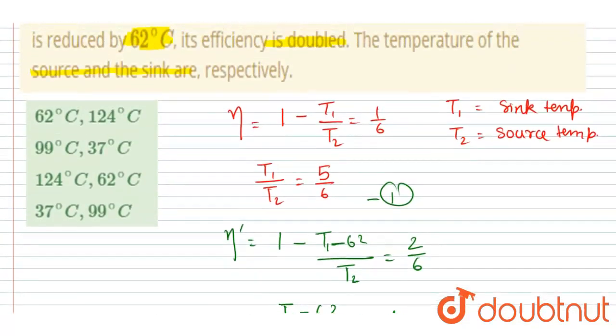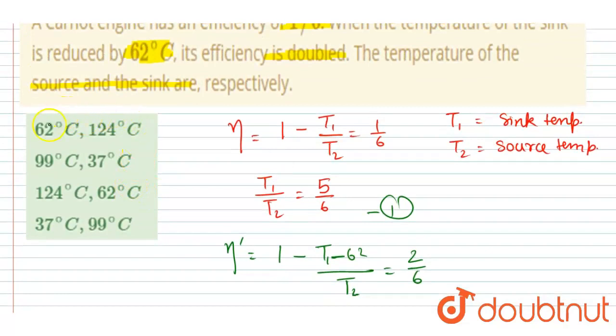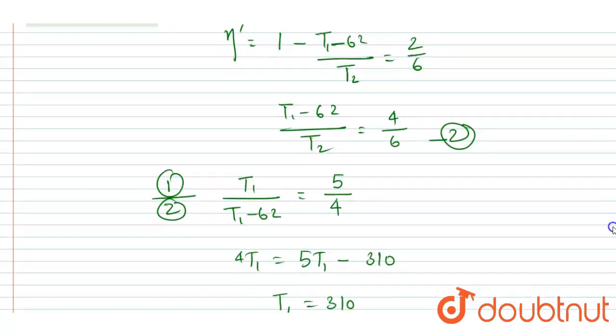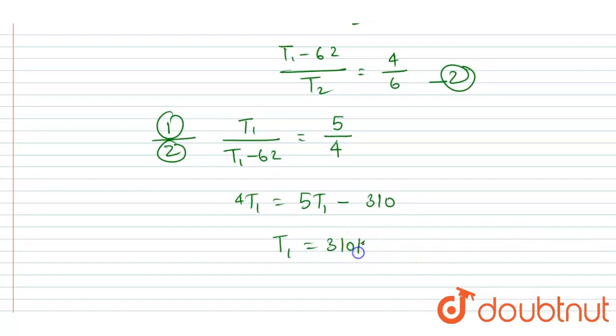in the question, in the options here, the options are in degree Celsius. This is in Kelvin, so if I subtract 273 from this, then I will get